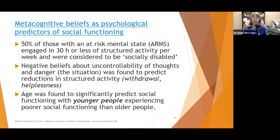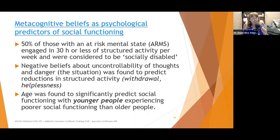50% of people in an at-risk mental state, or ARMS, engage in 30 hours or less of structured activity per week and are considered socially disabled. Negative beliefs about the uncontrollability of thoughts and danger were found to predict reductions in structured activity through withdrawal and helplessness. When people feel the world is dangerous, their thoughts are dangerous, and they can't control anything, they tend to withdraw and stay in their comfort zone. Interestingly, age significantly predicted social functioning, with younger people having poorer social functioning — younger people had less distress tolerance, which is a target we can work on for prevention by helping people develop more distress-tolerant cognitive strategies.